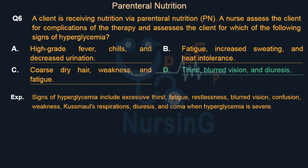Right answer is Option D. Signs of hyperglycemia include excessive thirst, fatigue, restlessness, blurred vision, confusion, weakness, Kussmaul's respirations, diuresis, and coma when hyperglycemia is severe.